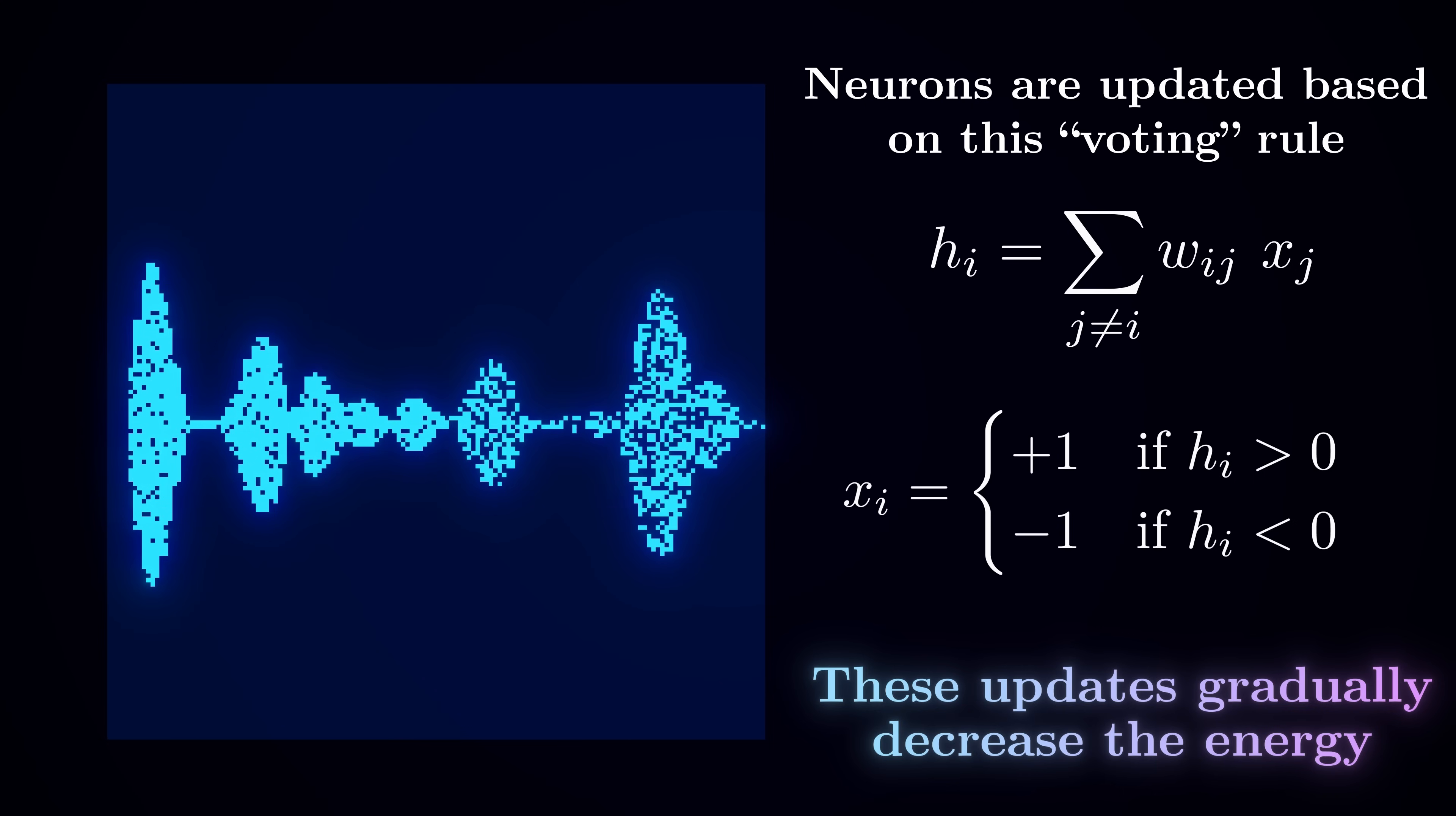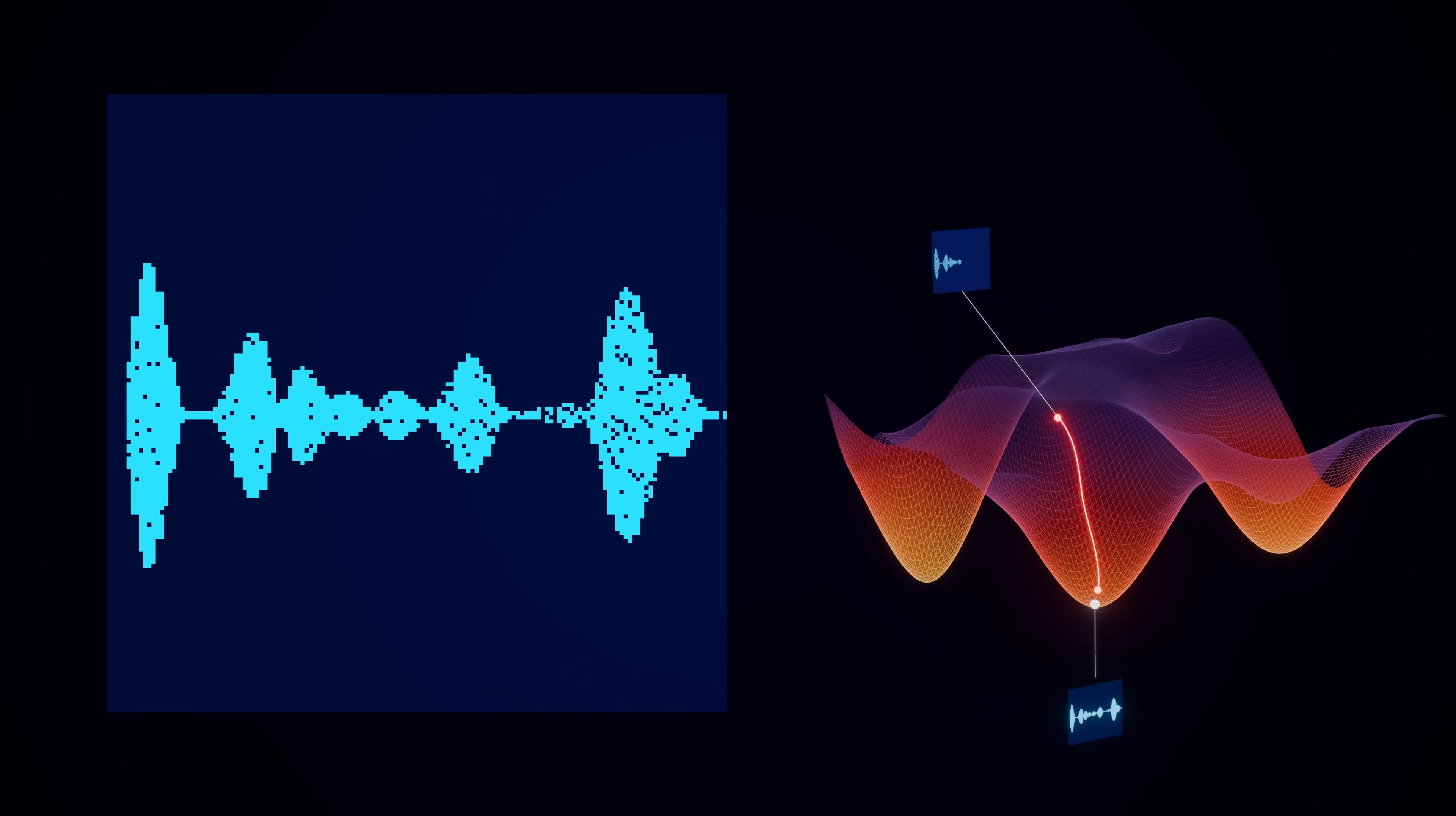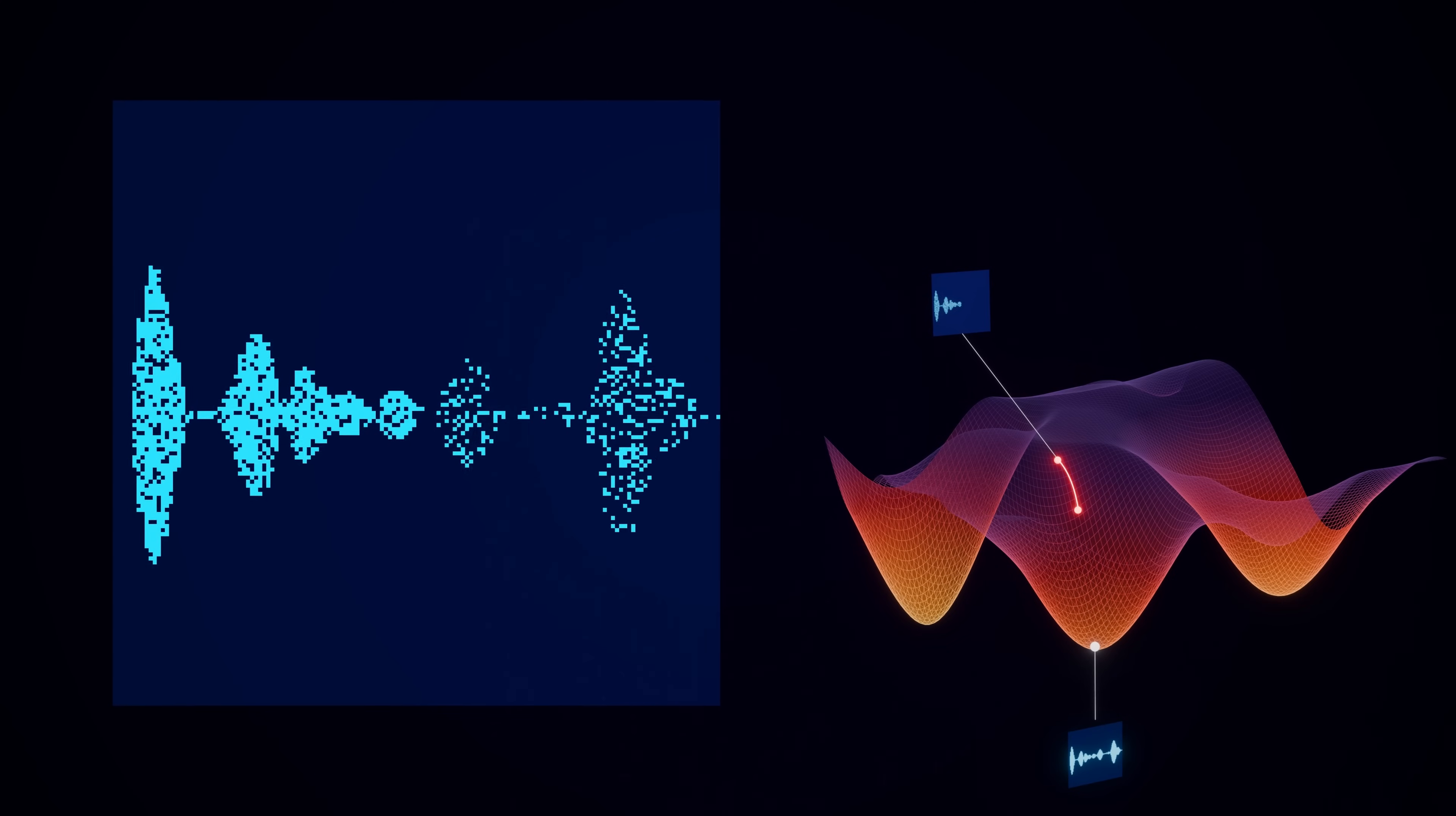We'll keep repeating this process, doing these sweeps through all neurons, updating them one at a time based on the current configuration. As we do this, the network will gradually evolve towards a configuration that minimizes the overall energy.